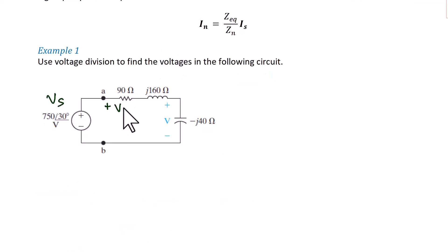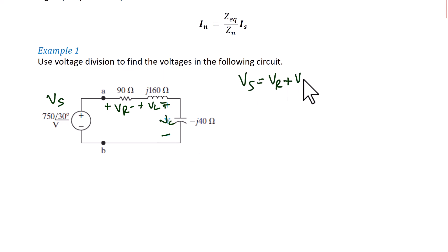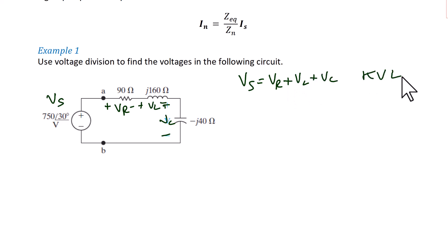Example 1: use voltage division to find the voltages in the following circuit. Vs is our source, Vr is the voltage across the resistor, Vl is the voltage across the inductor, and Vc is the voltage across the capacitor. Using KVL, Vs equals Vr plus Vl plus Vc. We will use voltage division to solve.